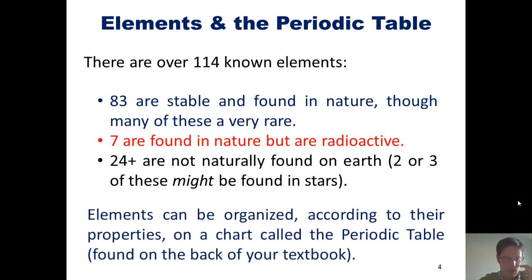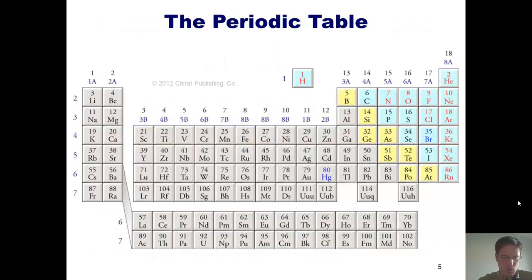Elements can be organized according to their properties on a magical chart called the periodic table, which is found in the back of our class textbook. Here's what the periodic table looks like. In spite of being somewhat unassuming in appearance, this table contains a wealth of information critical for understanding everything about the physical world around us. This information took humankind many centuries of research to discover.